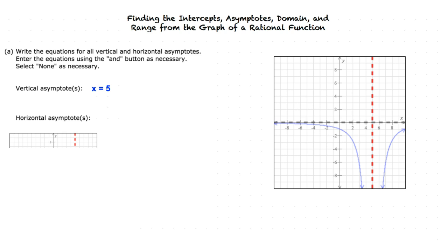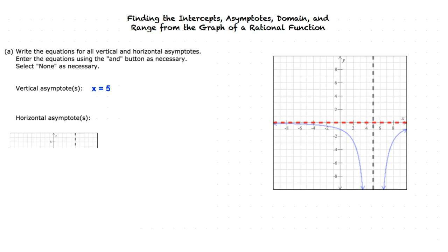Now let's find the horizontal asymptote. Horizontal refers to side to side, so we are looking for an asymptote parallel to the x-axis. The graph lines extend towards negative infinity but don't pass y equals 0. Our answer is y equals 0, because the graph gets very, very close to y equals 0 but never quite touches it.